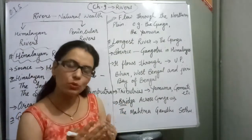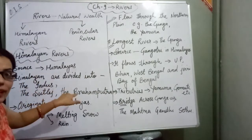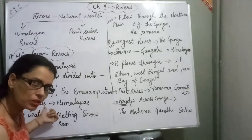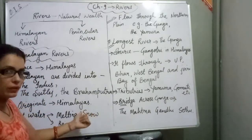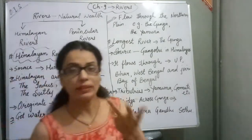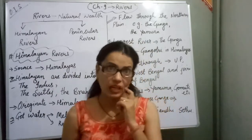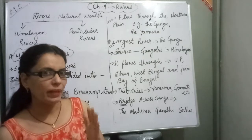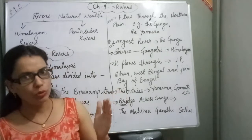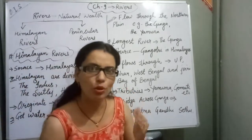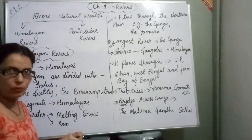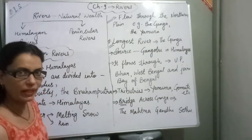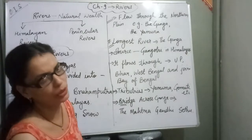The first thing is where the river starts from — that is where the water comes from. The water is very high up. When the snow melts, the rivers get water from the melting snow and also from rain.